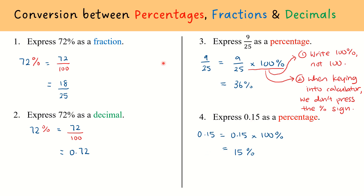Looking at these examples, we learned that when given a percentage and I want to convert it into a fraction or a decimal, I need to divide by 100. On the other hand, if I'm given a value and I want to convert it to a percentage, I will multiply by 100%. In my working, I write 100% to show that they are actually equivalent in value.